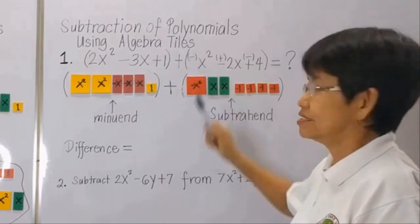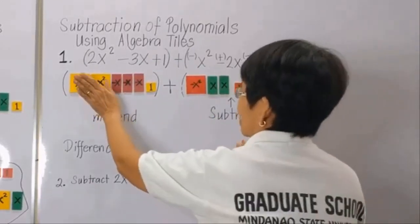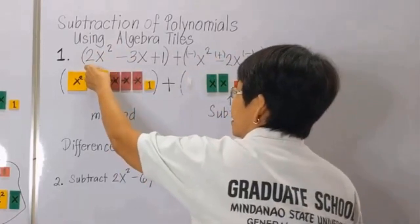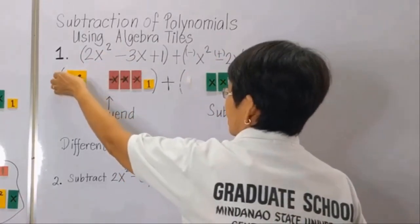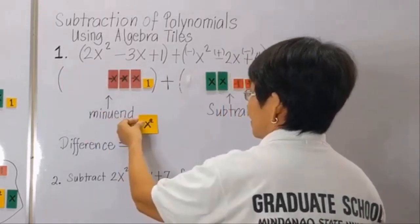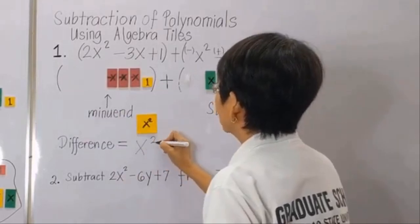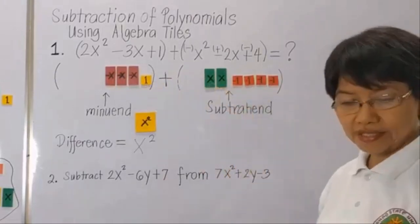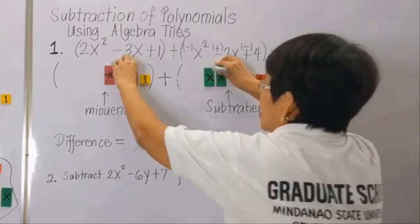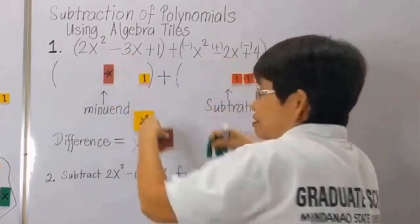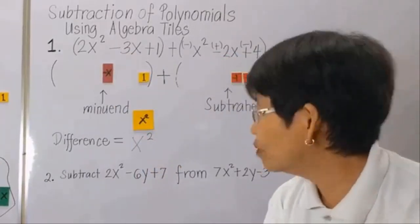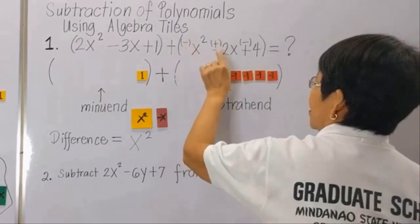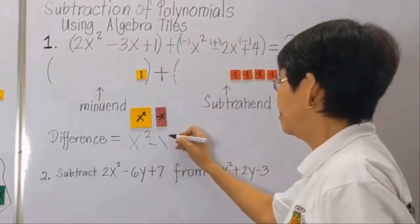So 2x squared minus x squared — we combine these tiles and we have a zero pair, so we set this aside. What is left is x squared. Then we have three x's here and two x's, so we have two zero pairs. What is left is negative x. Negative 3x plus 2x is equal to negative x.